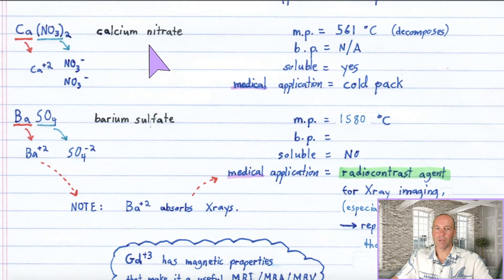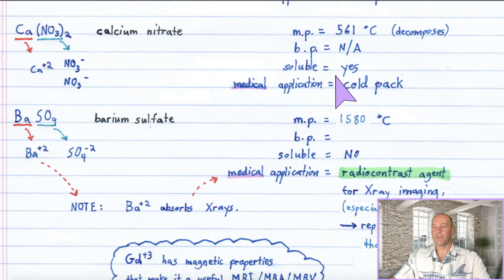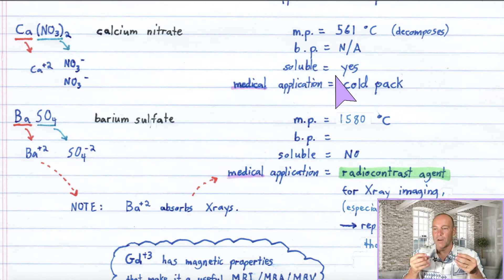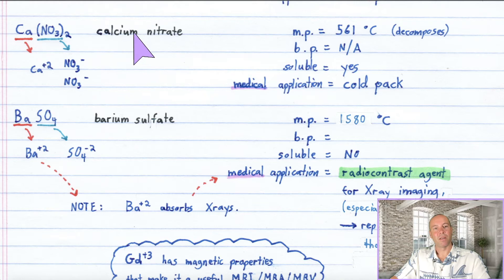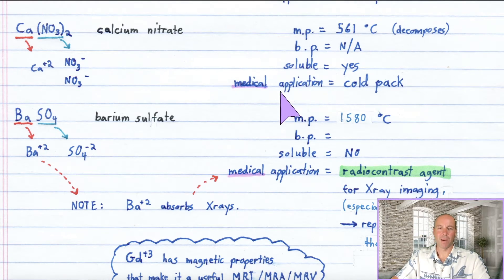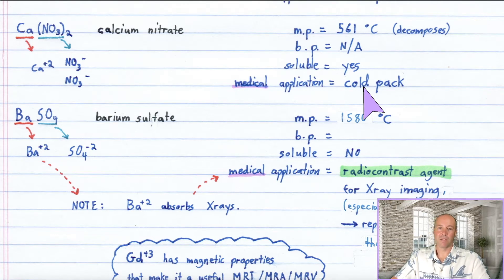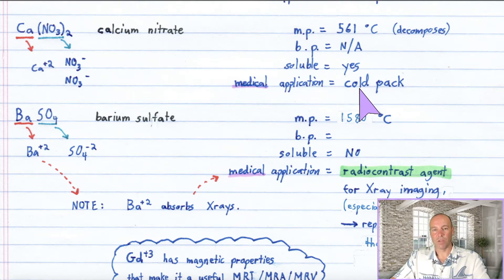An important medical application: calcium nitrate is used as an ingredient in a cold pack. The way a cold pack works is the calcium nitrate is in a pocket on one side and water on the other side. When you break the seal, the water mixes with it and the temperature decreases. Cold packs are really important in medicine — if you don't have any ice around, you can still cool down certain regions of the body if needed.